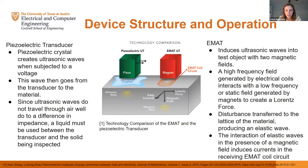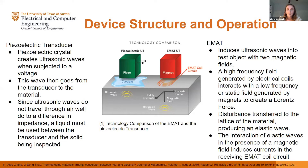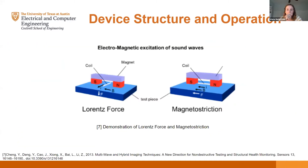With EMATs, an ultrasonic wave is induced into a test field using two magnetic fields. The first is a high-frequency field generated by electrical coils, which interacts with a low-frequency or even static field generated by magnets. This creates a Lorentz force, and the disturbance is transferred into the lattice of the material, producing an elastic wave. The interaction of those elastic waves in the presence of a magnetic field then induces a current in the receiving EMAT coil.